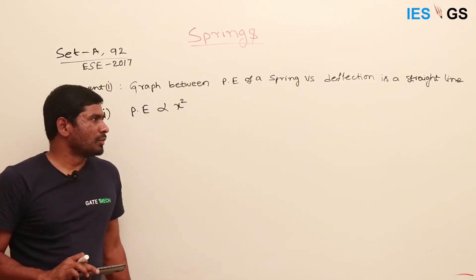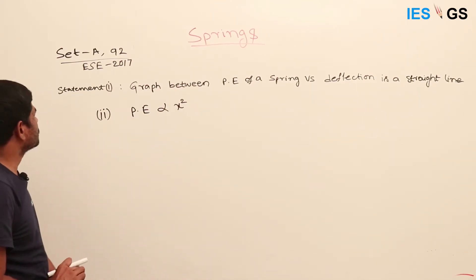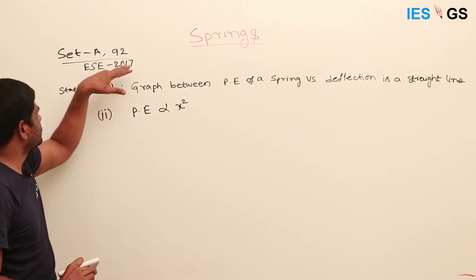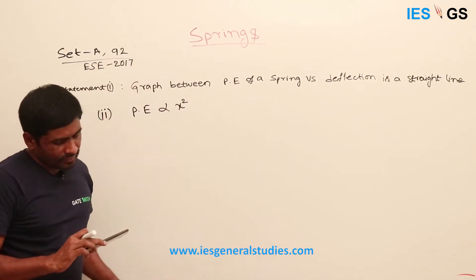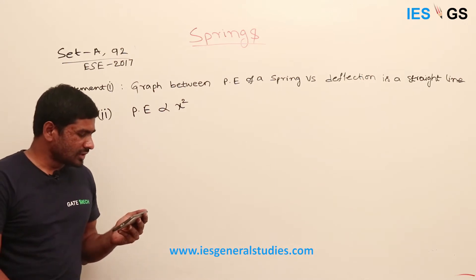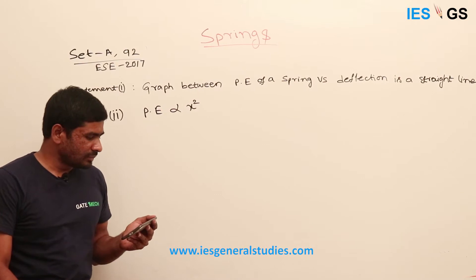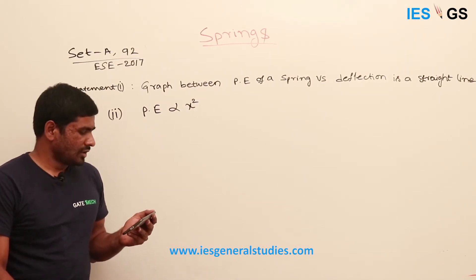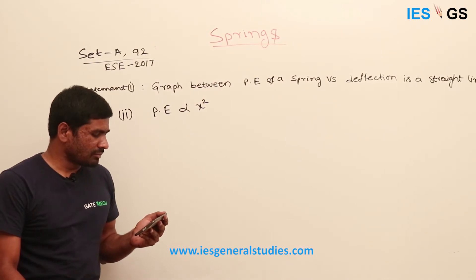This problem was asked in ESC 2017, set A. Statement 1: the graph between potential energy of a spring versus the extension or compression of the spring is a straight line. Statement 2: the potential energy of a stretched or compressed spring is directly proportional to the square of extension or compression.